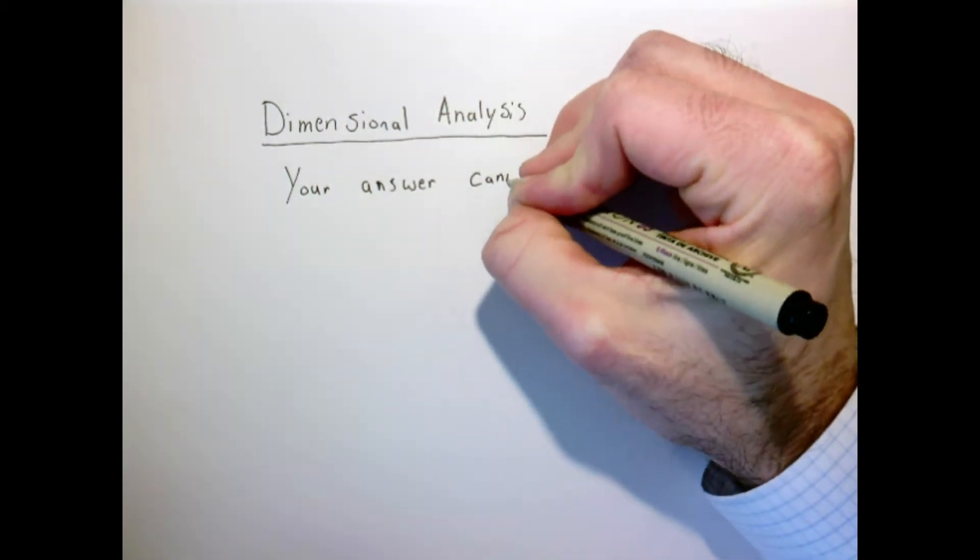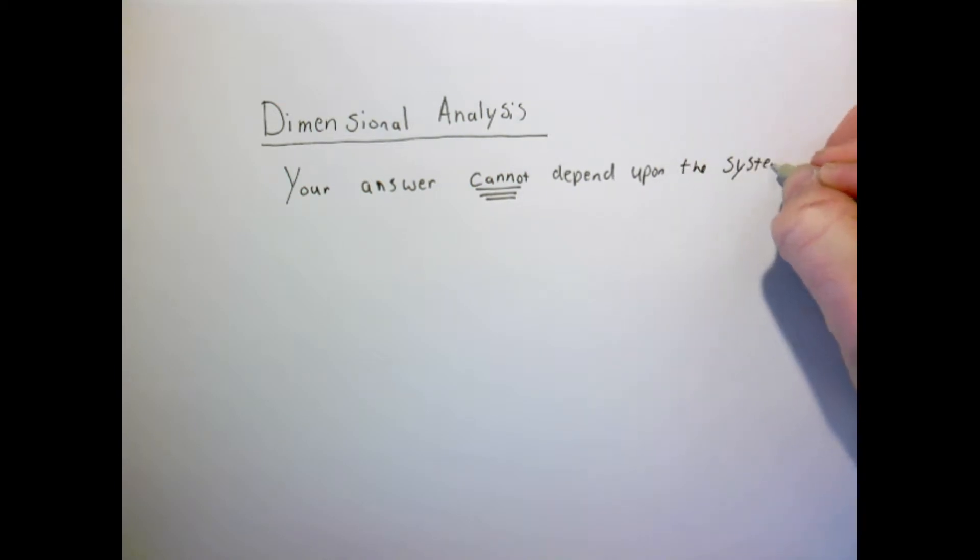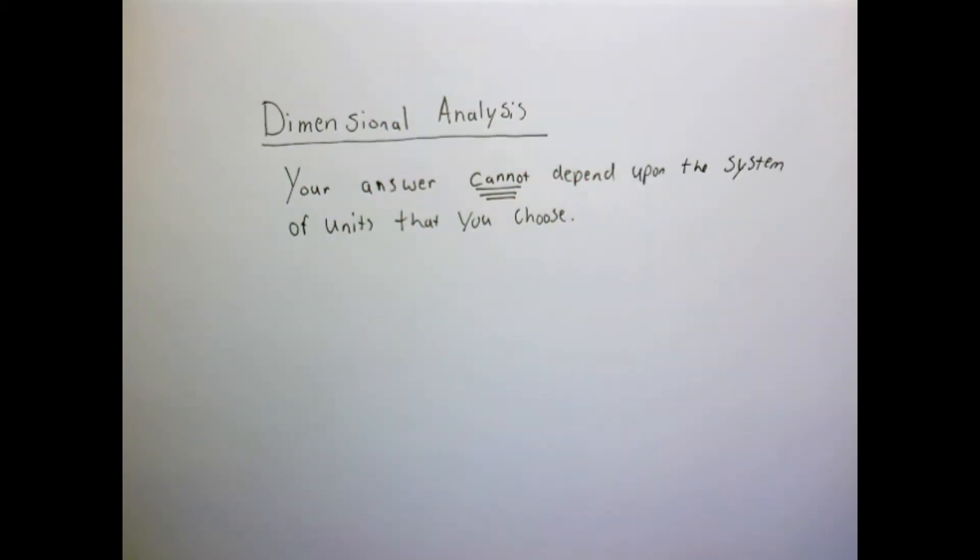Today we're going to discuss dimensional analysis. The key to dimensional analysis is this sort of obvious statement that your answer cannot depend upon the system of units that you choose. Units are something they're man-made. We select what we want to call a kilogram or a meter or a second, and therefore physical results cannot depend upon those quantities. So we'll give several examples here, but that's basically the key to dimensional analysis.